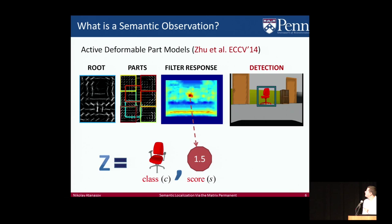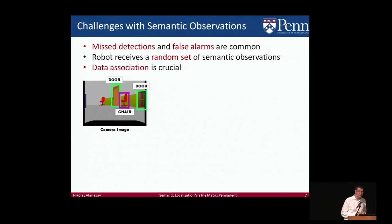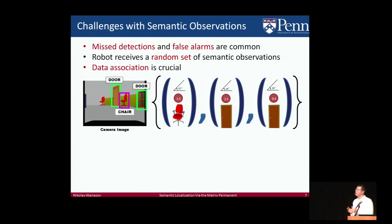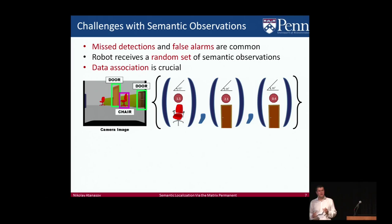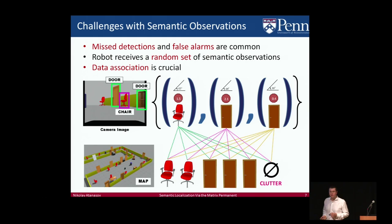Including semantic vision processing in the localization loop brings challenges. In particular, there are misdetections and false alarms produced by the vision algorithm, and really the best model for the received observations is a set whose cardinality randomly varies at any point in time — we'll be receiving a different number of semantic observations. Since we're dealing with higher-level information, data association is crucial: we need to associate detections with objects on the map, and there may be multiple instances. Making a mistake at this level is worse than with geometric features.